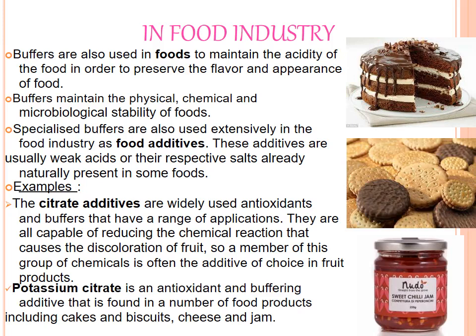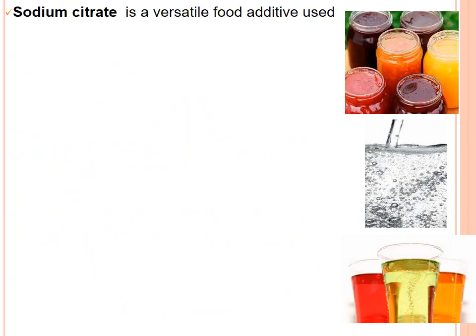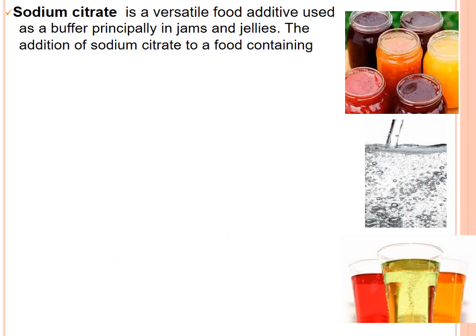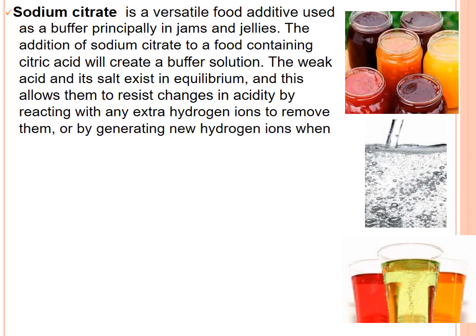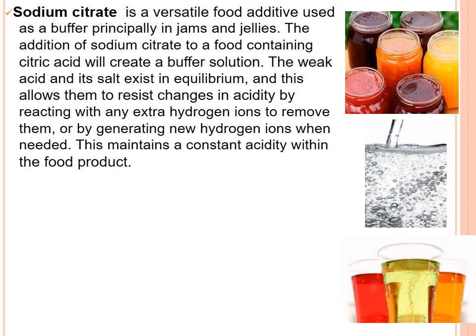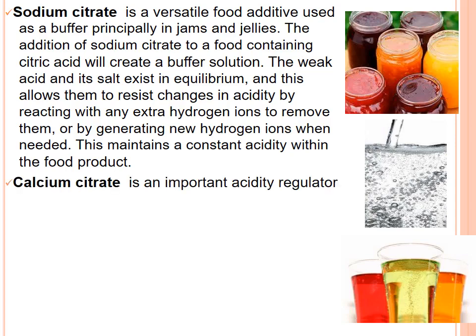Potassium citrate is an antioxidant and buffering additive that is found in a number of food products including cakes and biscuits. Sodium citrate is a versatile food additive used as a buffer, principally in jams and jellies. The addition of sodium citrate to a food containing citric acid will create a buffer solution. The weak acid and its salt exist in equilibrium, allowing them to resist changes in acidity by reacting with any extra hydrogen ions to remove them or by generating new hydrogen ions when needed. This maintains a constant acidity within the food product.